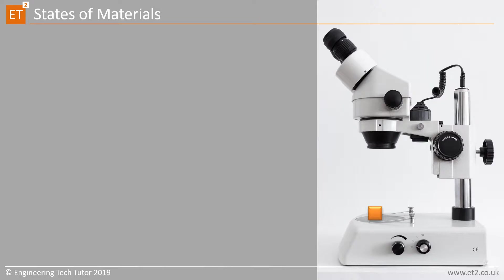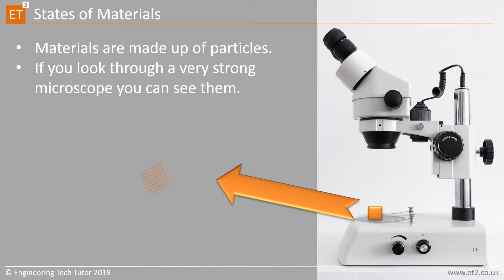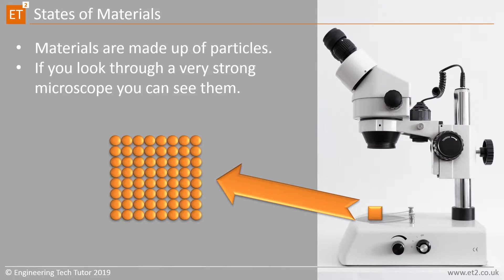Materials are made up of particles. If I was to look at this little orange block under a microscope, I would find that it actually looks like a lot of tiny little balls or shapes all held very closely together. All materials are made up of particles. The types of particles depend on what material we're looking at, but we won't cover that today.